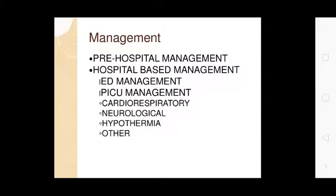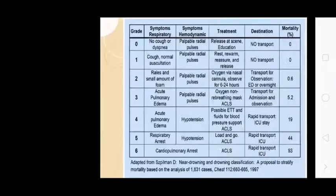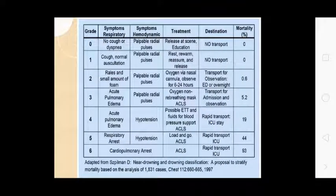Pre-hospital management includes ABC — airway, breathing, circulation. Immediate rescue and initiation of ventilation is the only way to interrupt the submersion. C-spine control, backboard, IV, oxygen, monitor, pulse oximetry, correction of acidosis by sodium bicarbonate, passive rewarming, and rapid transport. All near drowning victims need evaluation at a medical facility. Symptoms include respiratory distress, dyspnea.